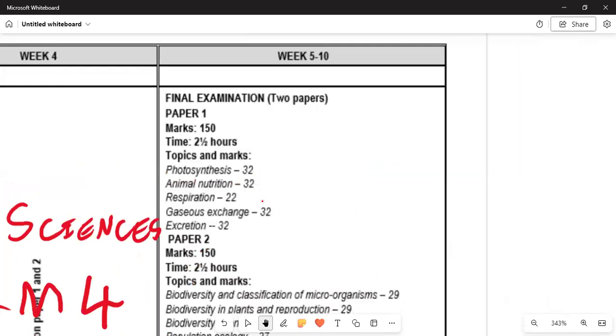The final examination has two papers. Paper 1 is out of 150 marks and the time is two and a half hours. The topics and marks that should be covered: you need to ensure that you are giving photosynthesis in full detail.